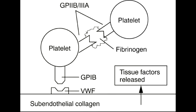The two mixed platelet and coagulation disorders are von Willebrand's disease and disseminated intravascular coagulation. Von Willebrand's disease is an autosomal dominant inheritance. It is the most common inherited bleeding disorder — a mild condition, but important to know because of its prevalence.